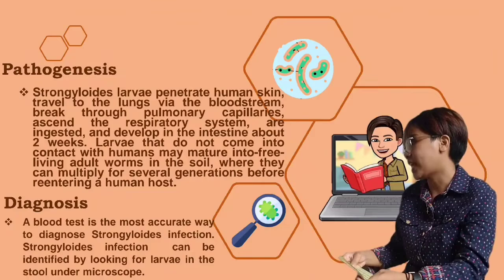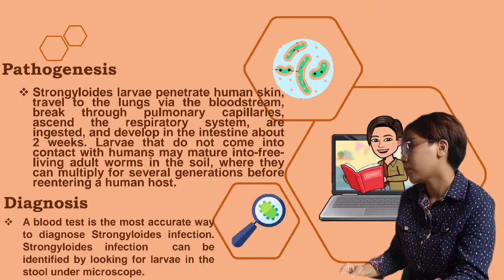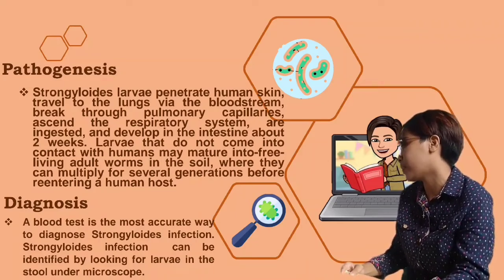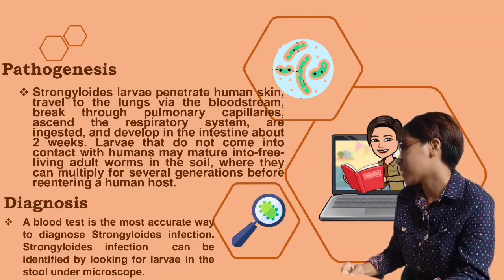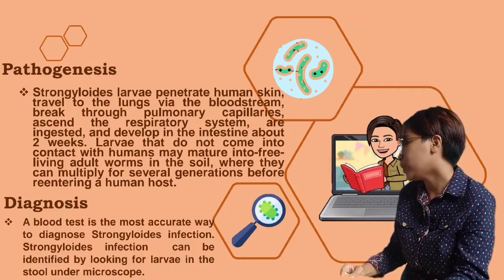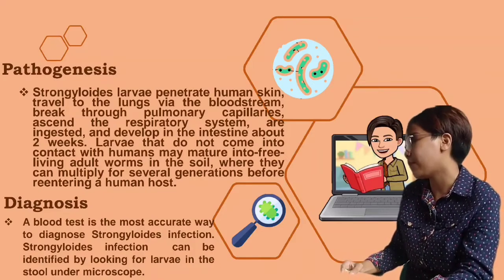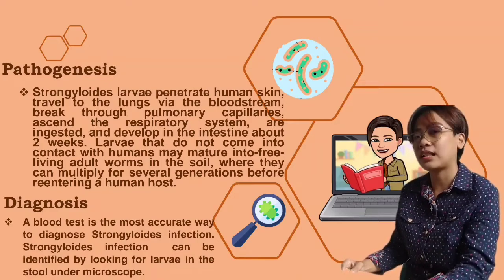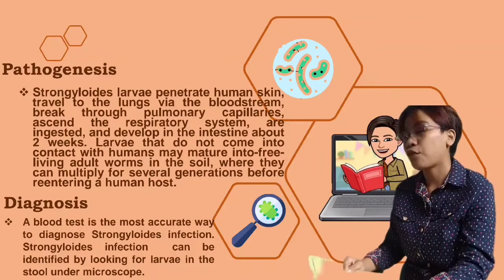For the pathogenesis, Strongyloides larvae penetrate human skin, travel to the lungs via the bloodstream, break through pulmonary capillaries, ascend the respiratory system, and are ingested and develop in the intestine in about 2 weeks. Larvae that do not come into contact with humans may mature into free-living adult worms in the soil, where they can multiply for several generations before re-entering a human host.